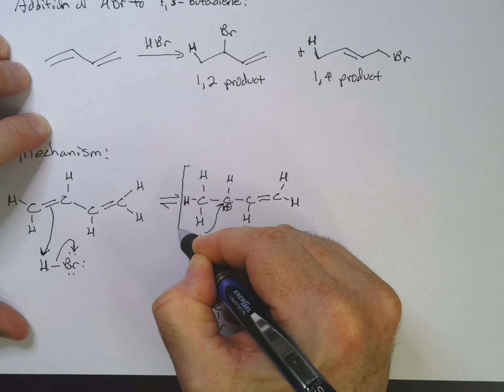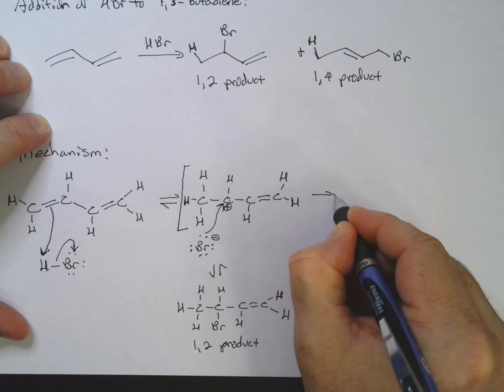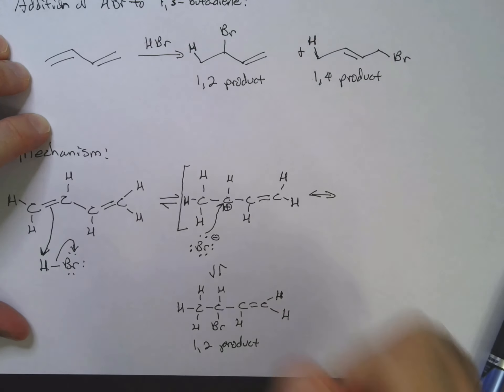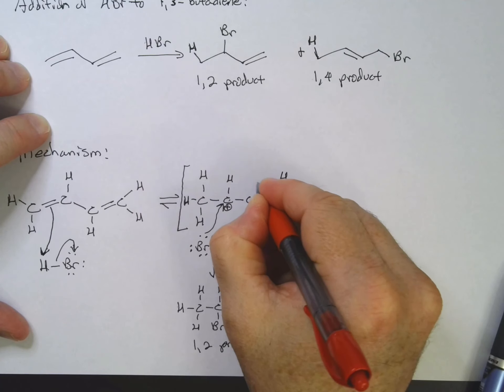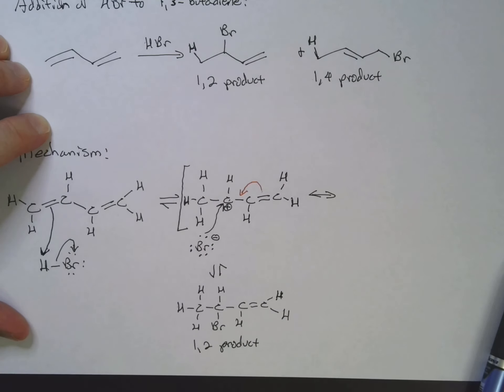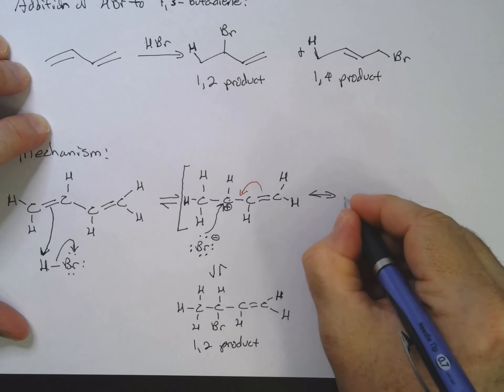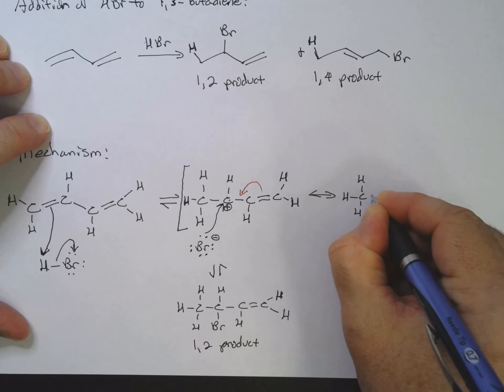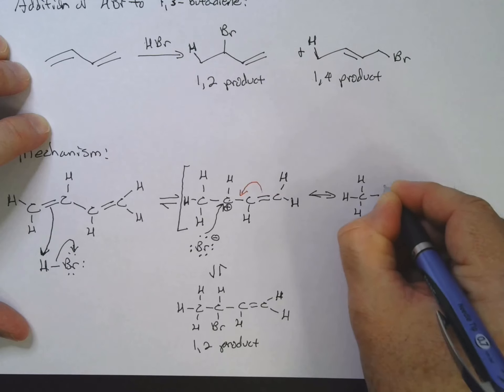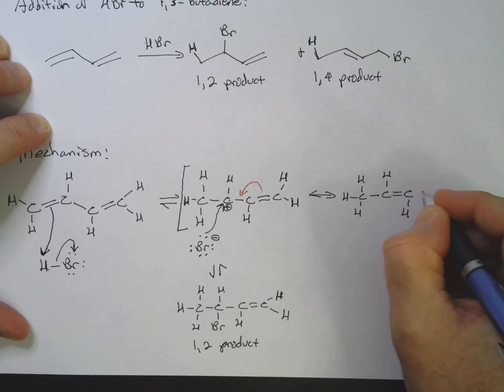So really, we have a resonance structure here. I'll go ahead and add in here with red. I'll push my electrons. And I've got H-C-H-H, C double bond C-H and that H there, C-H-H, positive charge there.